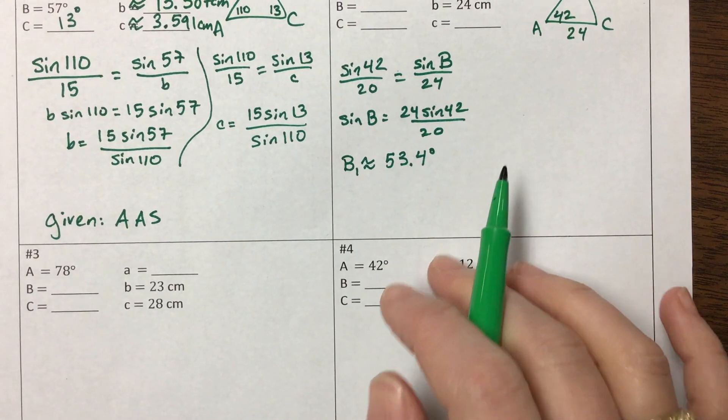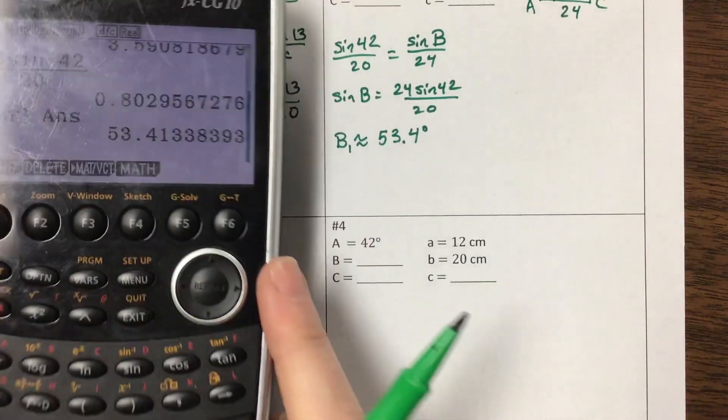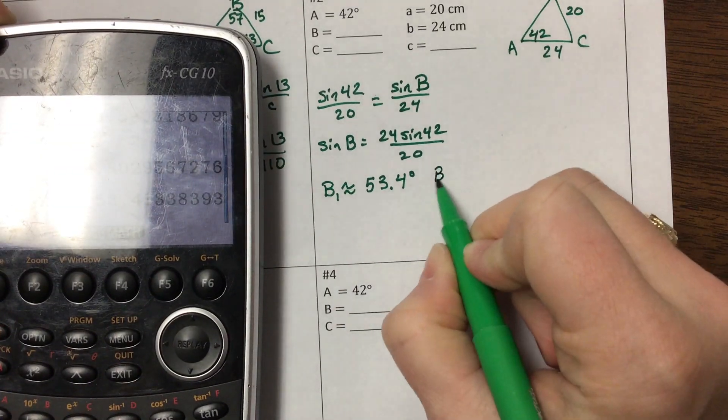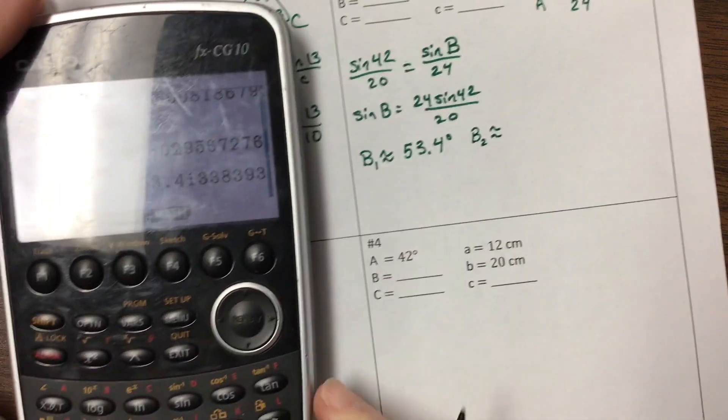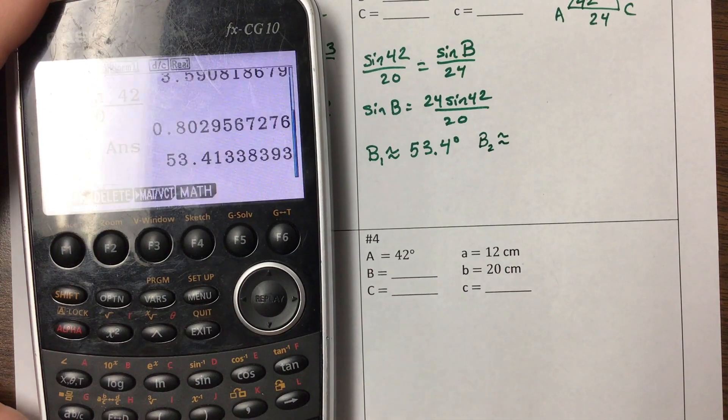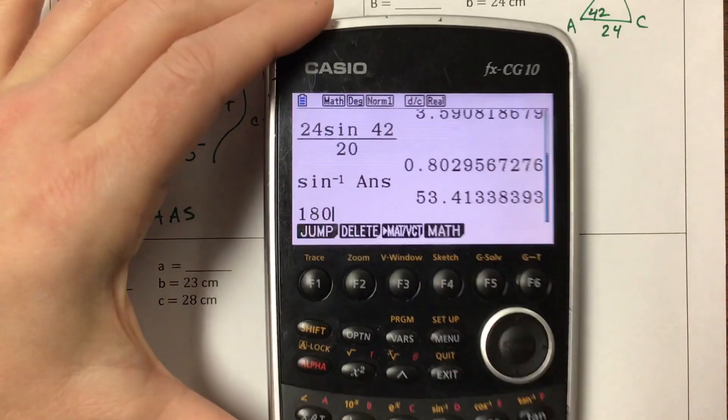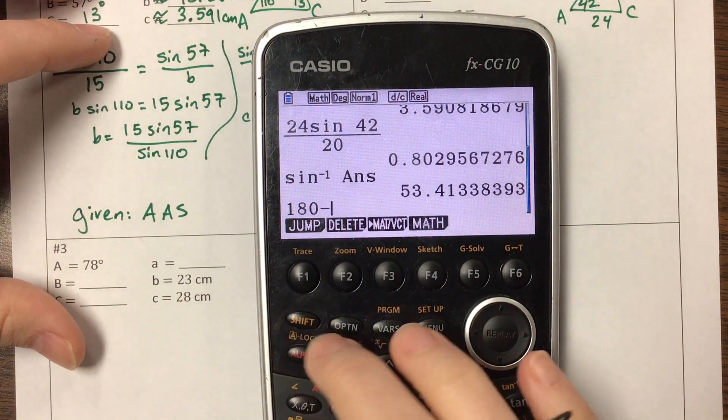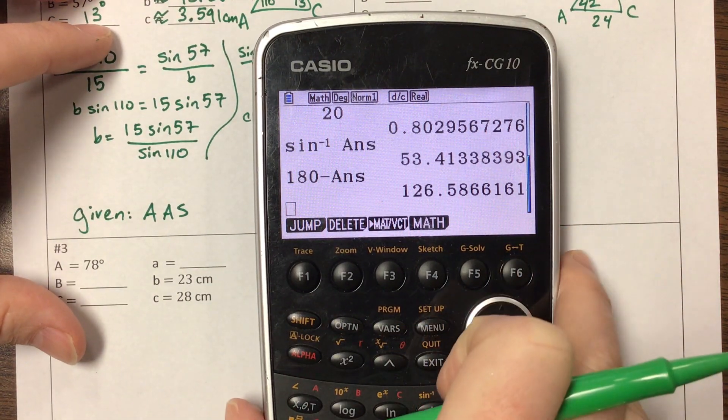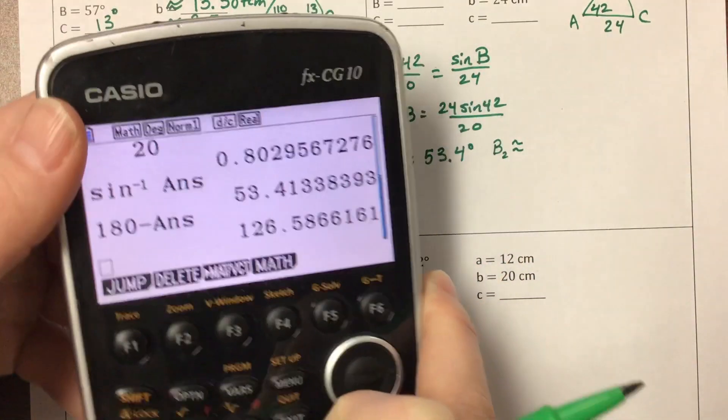Okay, so what we want to do is we say, okay, well, here's that B1. B sub 2 would be the supplement to that. So B sub 2 is 180 minus that answer. And so it's about 126.6.